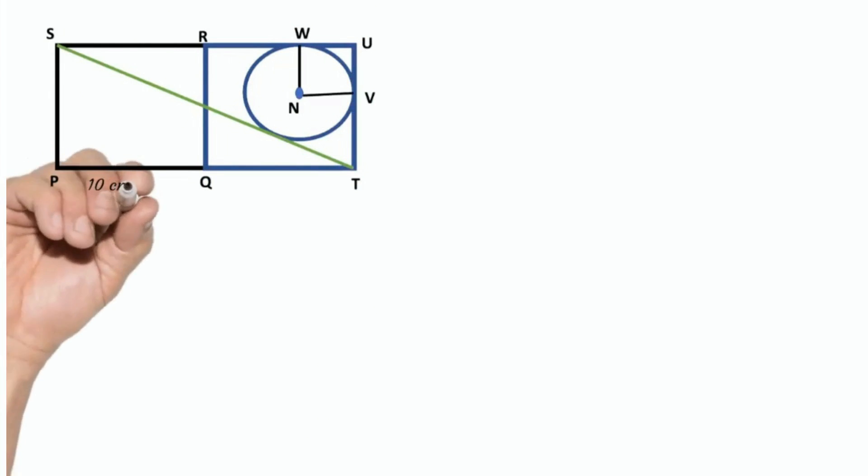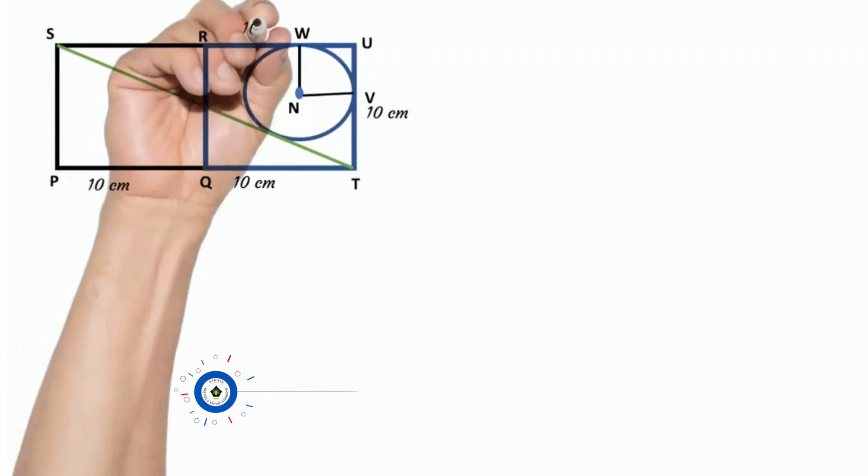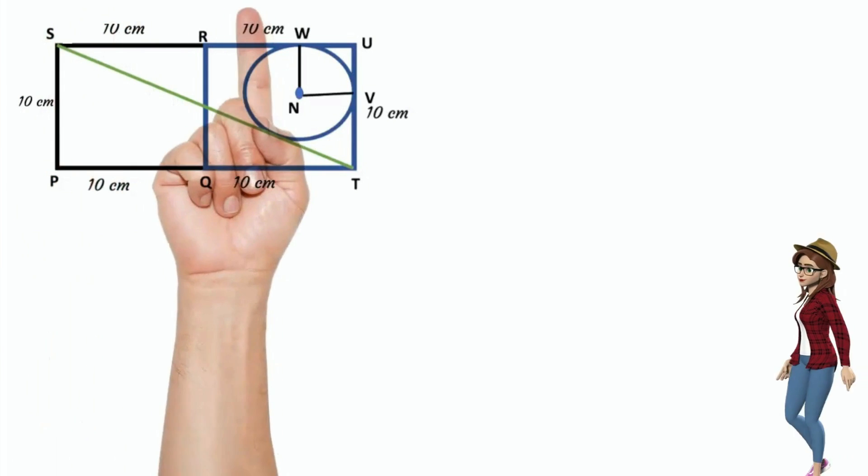Hi friends, here given that two congruent squares PQRS and QTUR, ST, SU and UT are tangents to the circle. Side length of the square is 10 cm. Assume that radius of the circle is R. We have to find the radius of the circle.